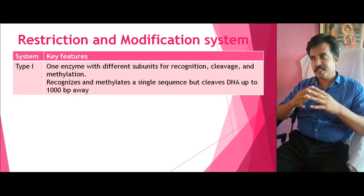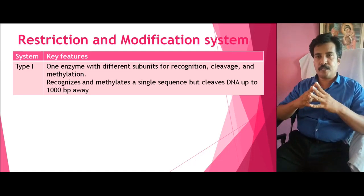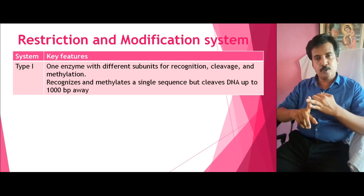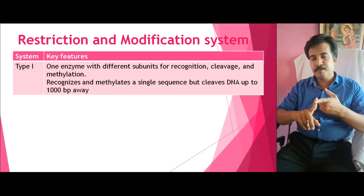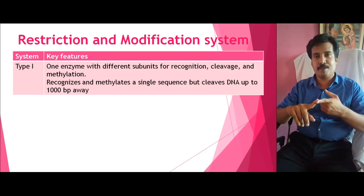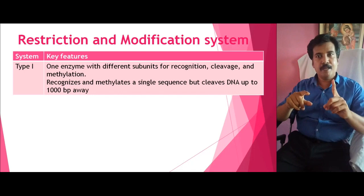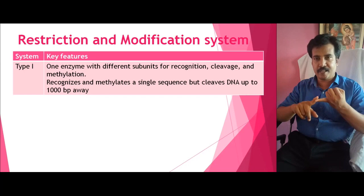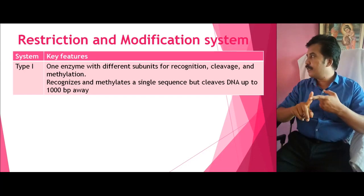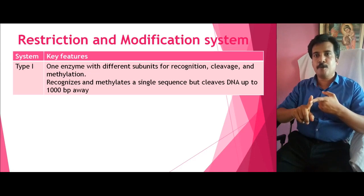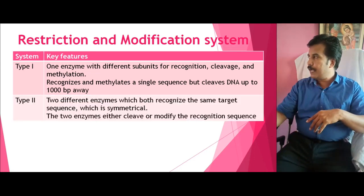Type 1 restriction enzyme is a single enzyme but it carries different subunits. These subunits are used for: (1) recognizing the sequence, (2) cutting the sequence, and (3) modifying the sequence — that is, methylation. It generally recognizes and methylates a single sequence, but cuts or restricts the DNA up to 1000 base pairs away from the recognition sequence. Any enzyme with these characteristics is classified as Type 1.